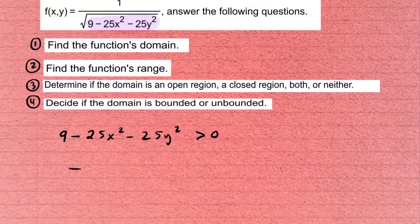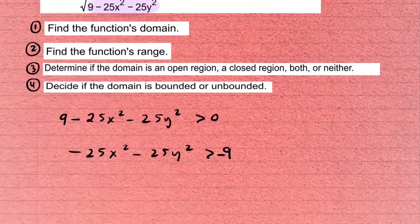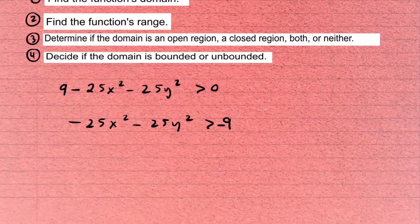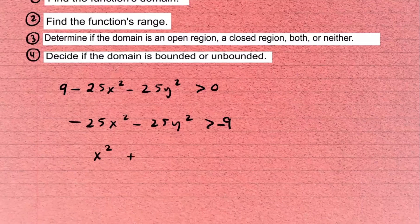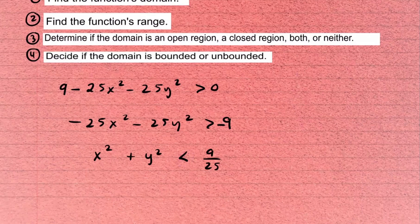Rearranging: move the 9 to the other side to get -25x² - 25y² > -9. Dividing by -25 (and flipping the inequality) gives x² + y² < 9/25. This is also a circle, but here we want the interior — all points where x² + y² is less than 9/25.